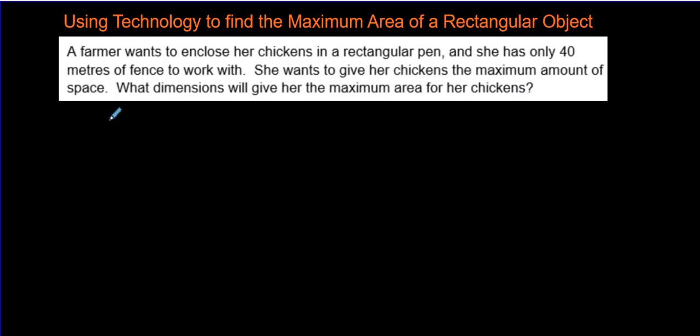The first thing, when it comes to a rectangle or a rectangular shape, we call this the length, and we call this the width. If we're talking about perimeter, the perimeter is 2 times the length plus 2 times the width. She has 40 meters of fence to work with, so we can write that right there.